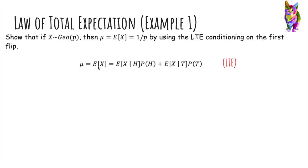So we're going to say that the expected value of X is the expected value of X given that we've got heads on the first flip times the probability of heads plus expected value of X given tails times the probability of tails. This is the law of total expectation.